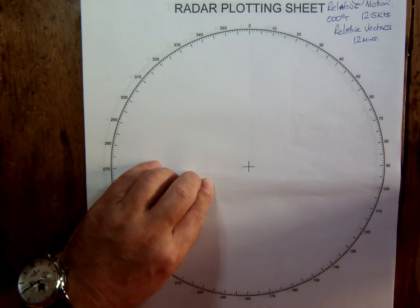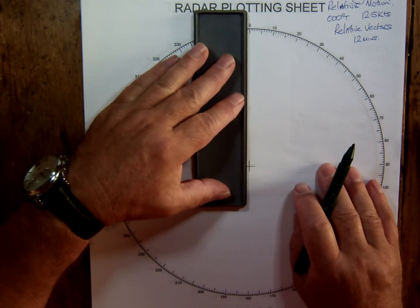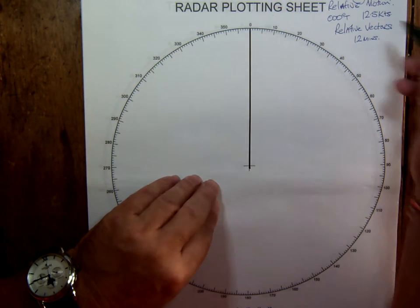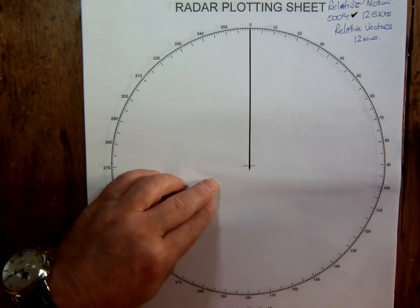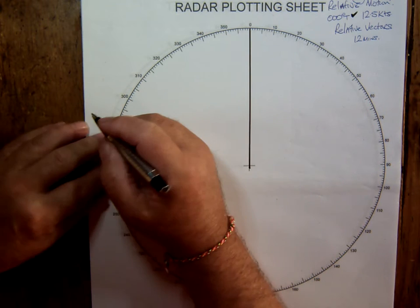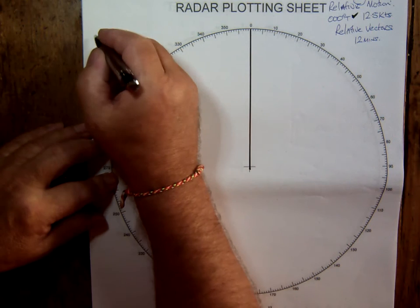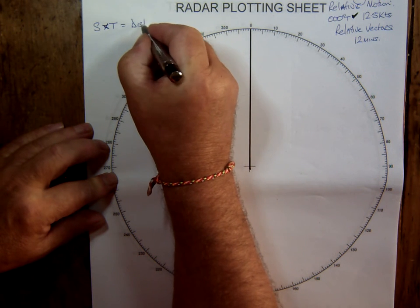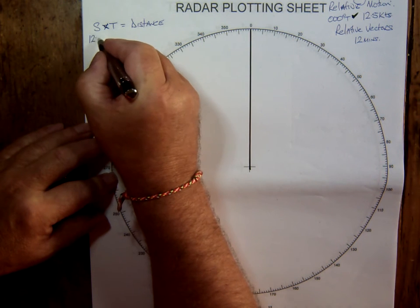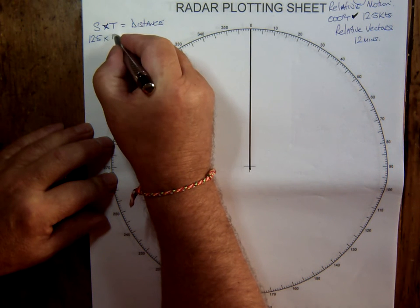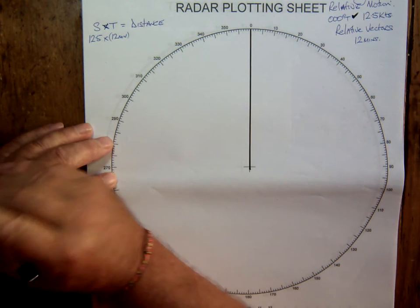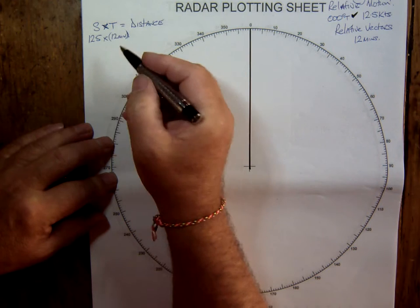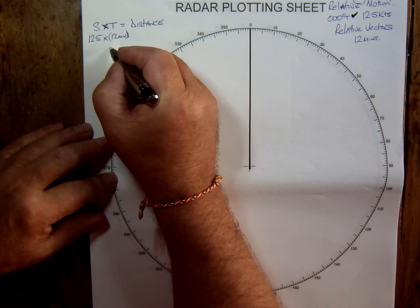So let's put that on. Here are my old compasses from when I was at Singapore — just found them in the drawer this morning. Our course is zero zero zero and we're doing 12.5 knots, so I need to work out what my vector length would be. Speed times time equals distance: 12.5 knots times 12 minutes. They need to be in the same units — speed is nautical miles per hour, and 12 minutes is 0.2 of an hour.